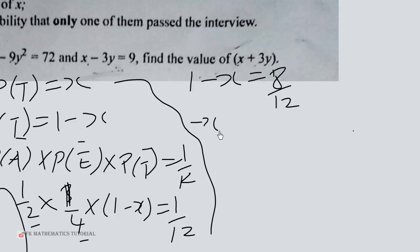So minus x is equal to 2 over 3 minus 1. So negative x is equal to negative 1 over 3. So x will be equal to 1 over 3.